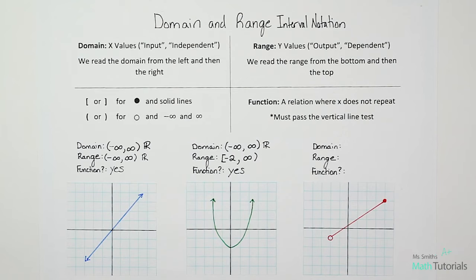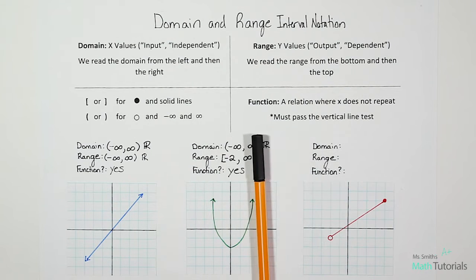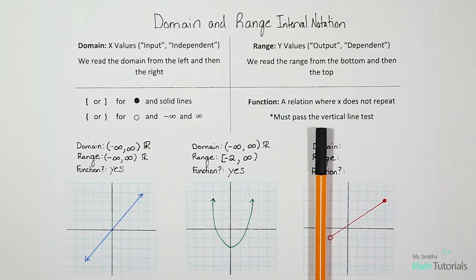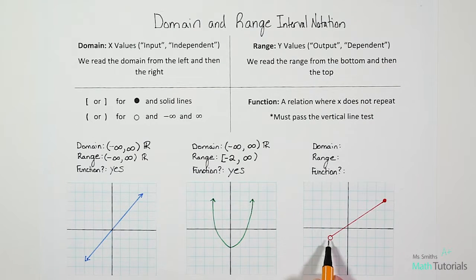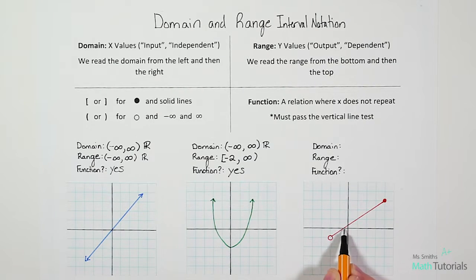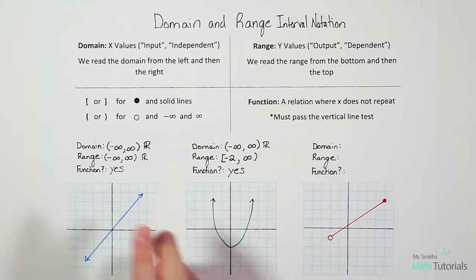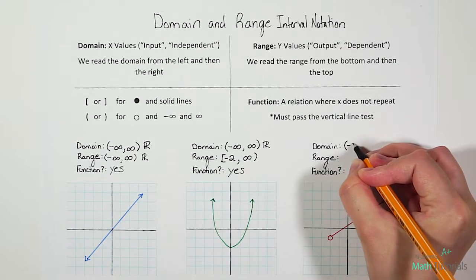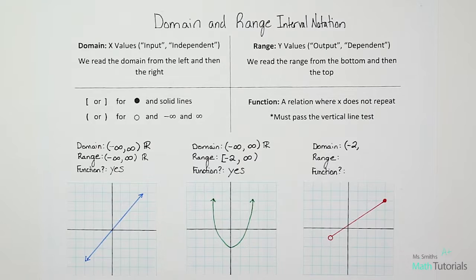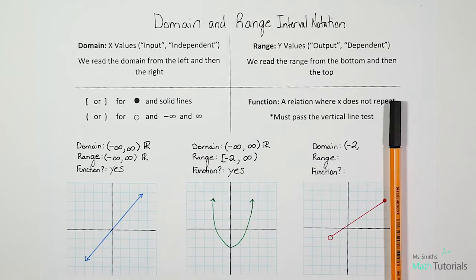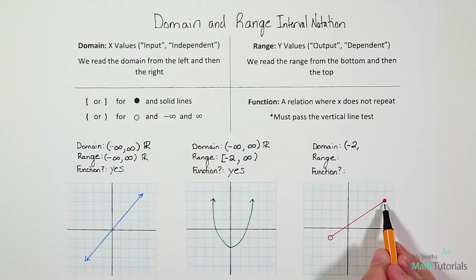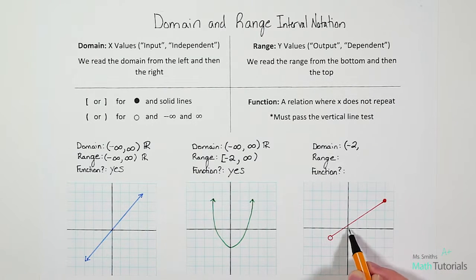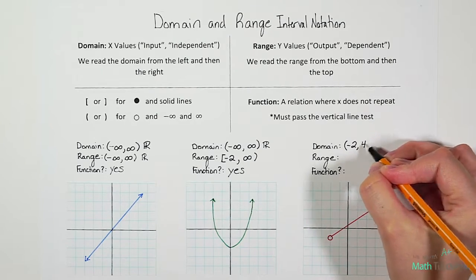For this next example, when we ask for our domain and look from the left, the first place we hit is an open circle. Domain means x, so we're looking at the x-axis — it falls at negative 2. Open circles get parentheses, so we're going to do a parenthesis, negative 2. When we pull in from the right, what's the first place we hit? It's a solid point at positive 4. Solid points get brackets.